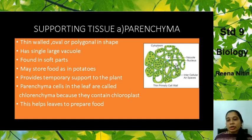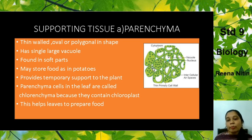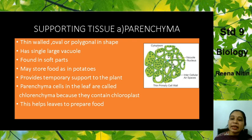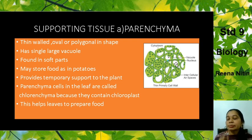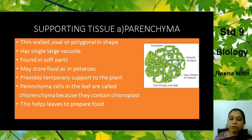This Parenchyma tissue is made up of cells. You can see they are thin-walled and oval or polygonal in shape — polygonal means having several sides. They have a single large vacuole — the empty space inside is the vacuole. They are found in the soft parts of the plant. For example, the potato that you eat is made up of Parenchyma cells. They store food and give temporary protection and support to the plant.